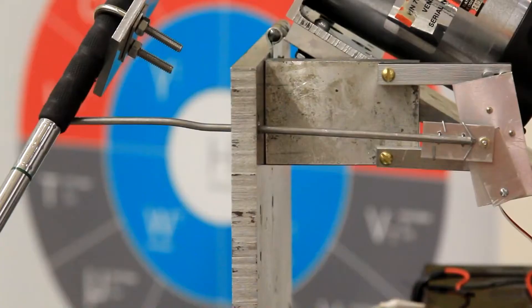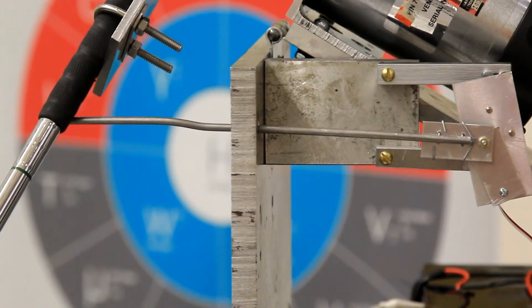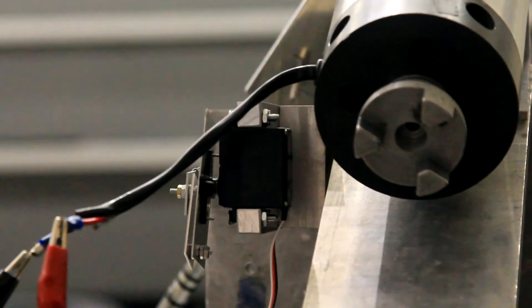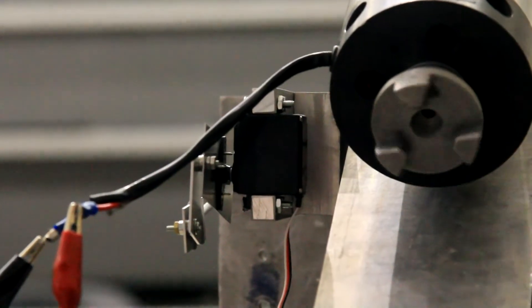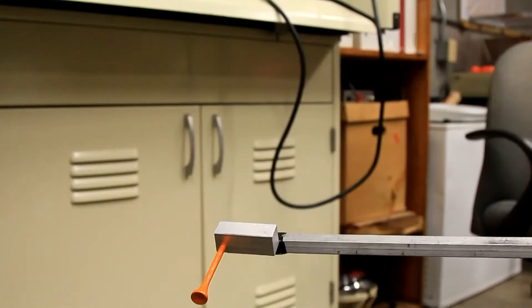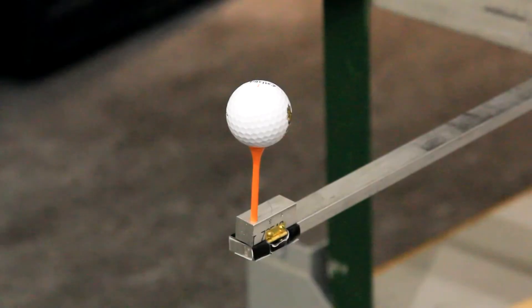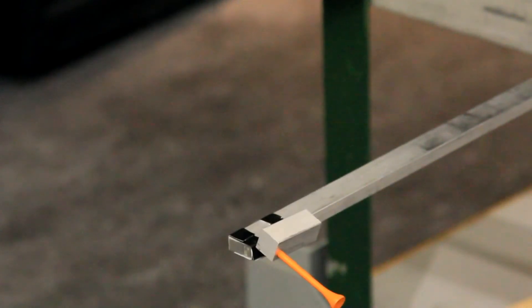In order to achieve a reproducible swing we created a device to hold the club in the same place every time. When the motor turns on the rod retracts and avoids the follow through of the club. To hold the ball we built an adjustable tee that after the ball is struck falls below the club's low point to avoid being struck again.